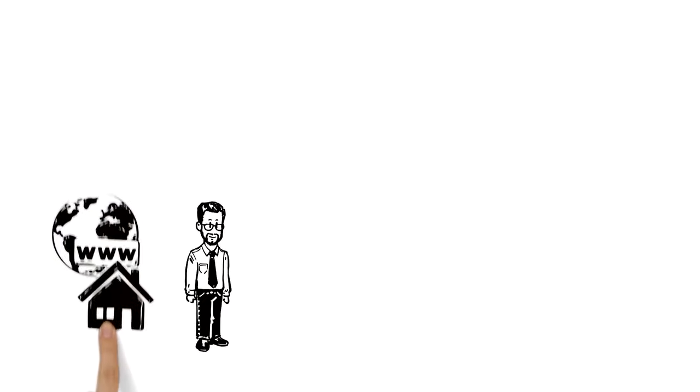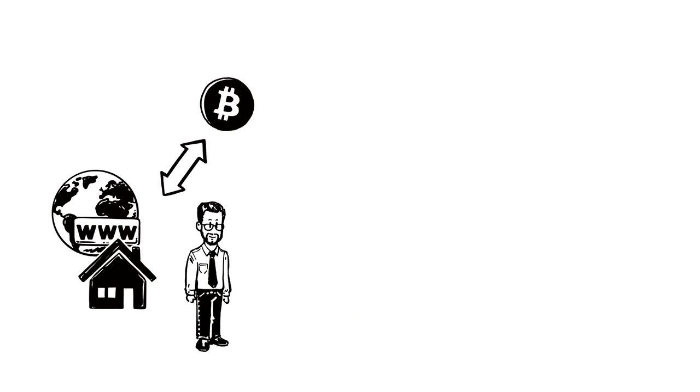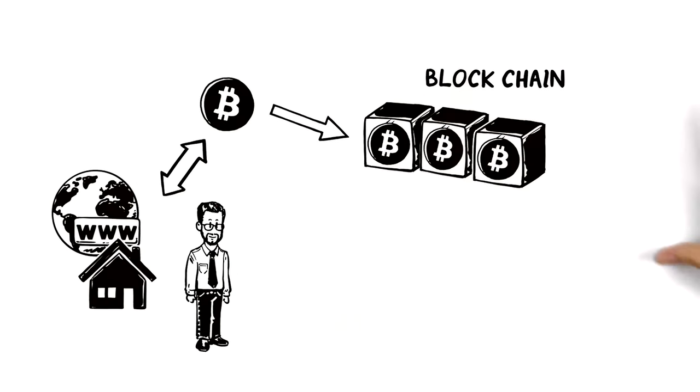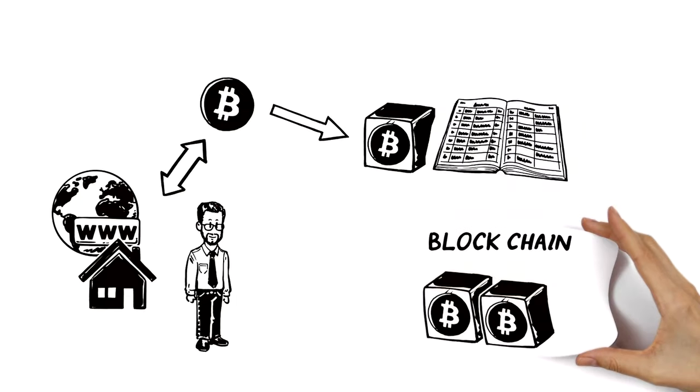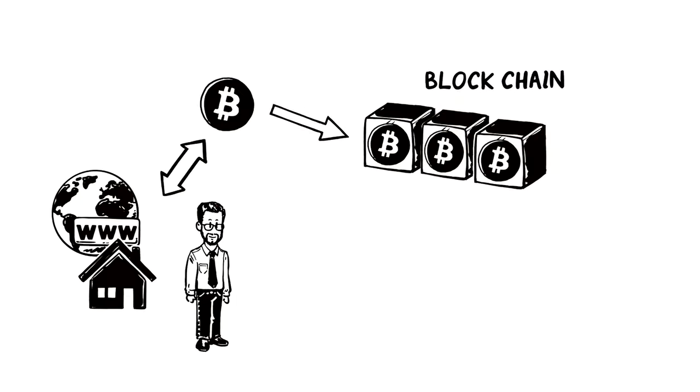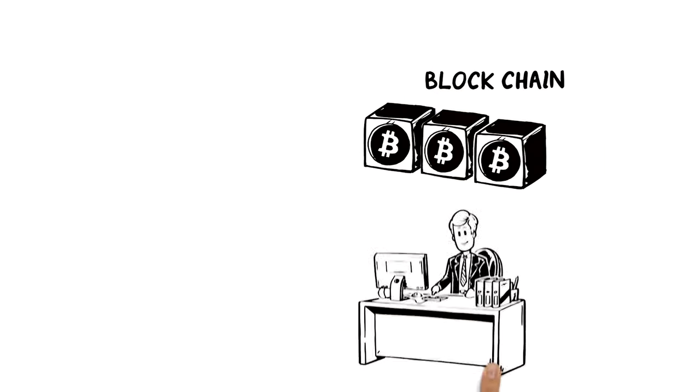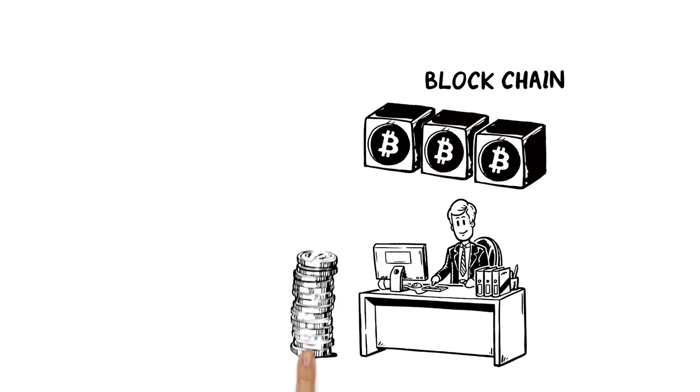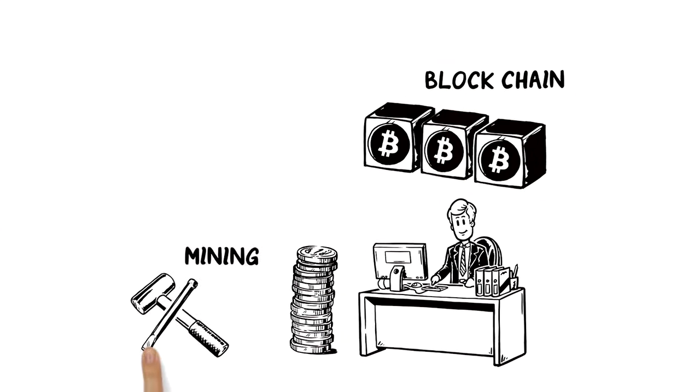Users each have their own address from which they can send and receive Bitcoins. A collection or block of these transactions is then added to the blockchain, Bitcoin's equivalent of a bank's ledger. Users that maintain this form of accounting are rewarded with new Bitcoins. This is known as mining.